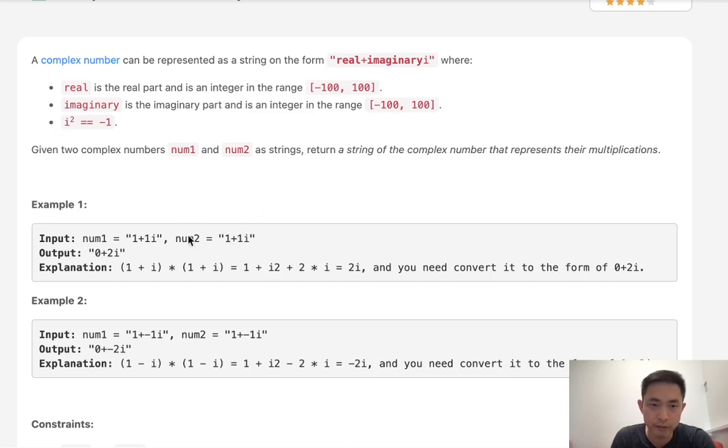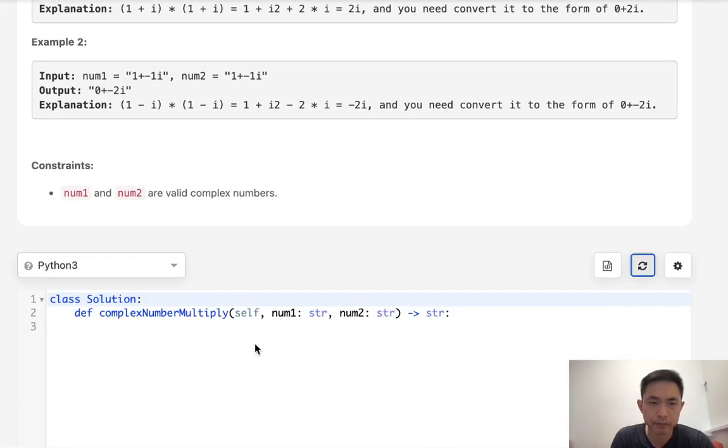So whatever the multiple of, let's call this b and d is, we'll subtract that from the multiple of a times c. Now the remainder of i that's going to form is going to be a times d plus b times c. So really it's just a matter of how do we split this up and create these variables. And luckily we know that the format is always going to be the same. They'll always be a plus and they'll always be an i. Whether there's a negative in front or not really depends on what is given to us.